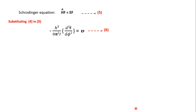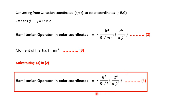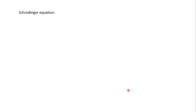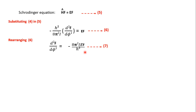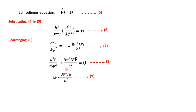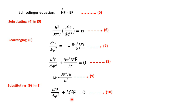Substituting the Hamiltonian operator — that is, −h²/8π²I × d²/dφ² — into the Schrödinger equation, we rearrange by taking all terms other than d²f/dφ² to the right-hand side. We get d²f/dφ² = −8π²IE/h² × f. Defining m² = 8π²IE/h², and bringing all terms to the left-hand side, we obtain: d²f/dφ² + m²f = 0.